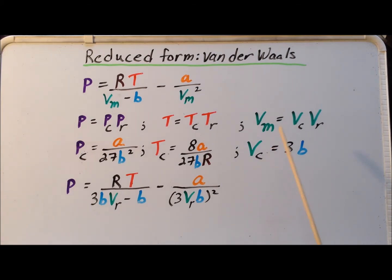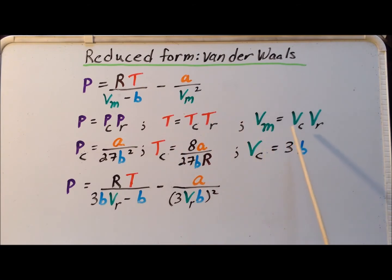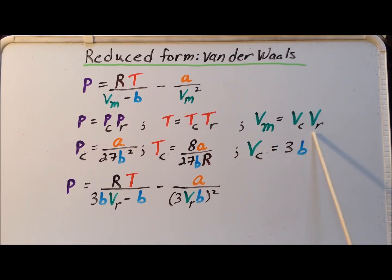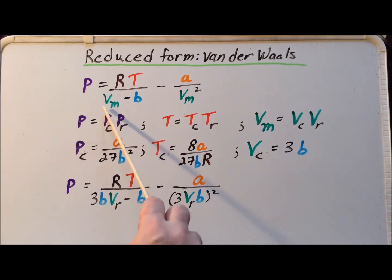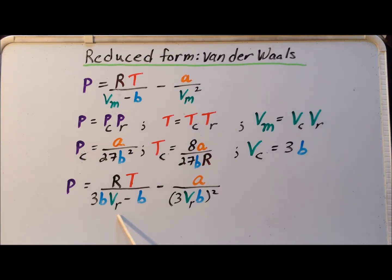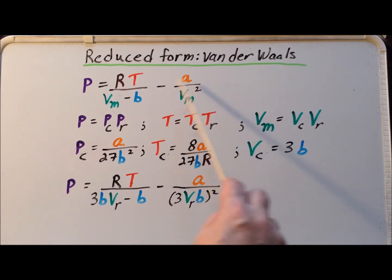We make use of the fact that we can rewrite the molar volume in the van der Waals equation as the critical volume times the reduced volume. We know that the critical volume is 3b, so we can replace v sub m by 3b·v sub r — we do it here and here. Since the molar volume is squared, we have to square this particular quantity.